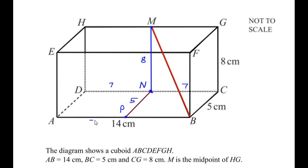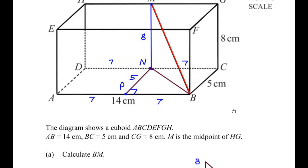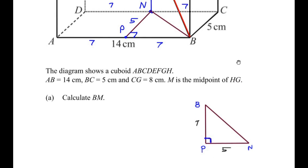Similarly, AP becomes 7 and PB becomes 7. Since ABCD is a rectangle (the base of the cuboid), PBCN also becomes a rectangle, so the angle at P becomes 90 degrees. Now let us join points N and B. Triangle PNB is a right-angle triangle, right-angled at P. Let me redraw this triangle — PB is 7 cm and PN is 5 cm.